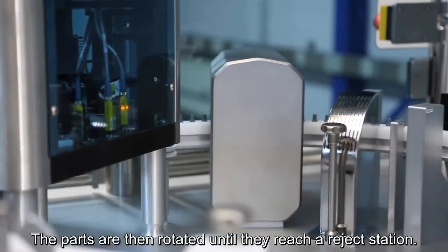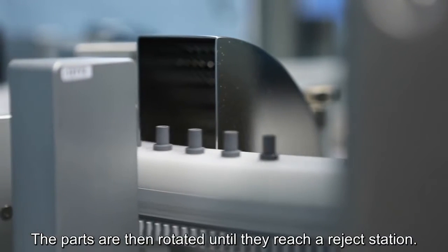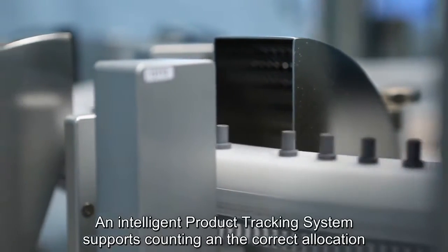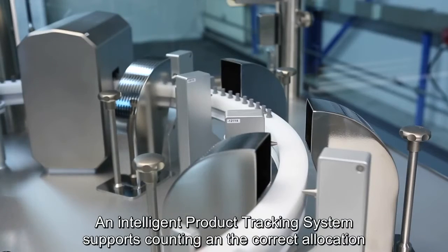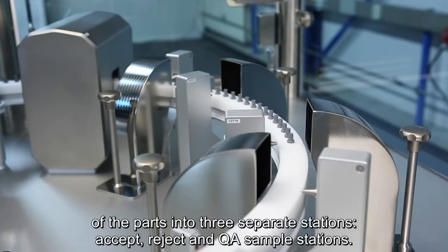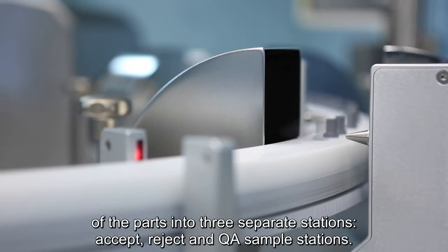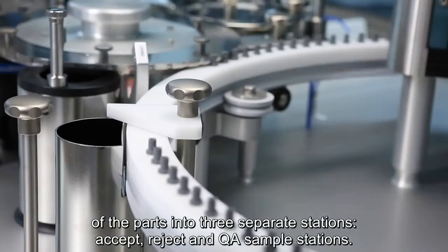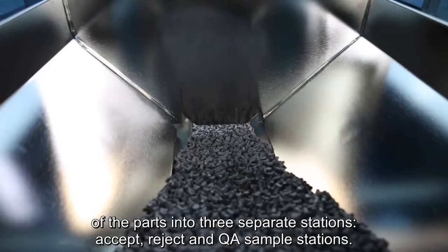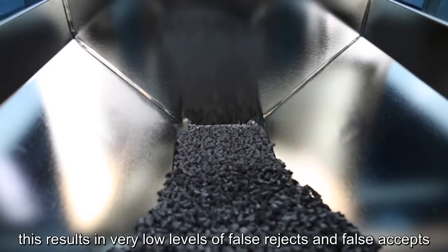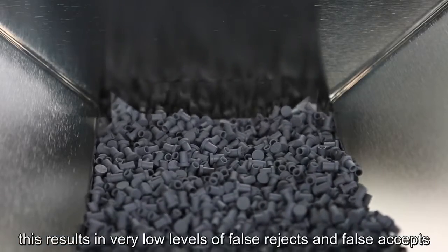The parts are then rotated until they reach a reject station. An intelligent product tracking system supports counting and the correct allocation of the parts into three separate stations: accept, reject, and QA sample stations. This results in a false acceptance of less than three products per million.